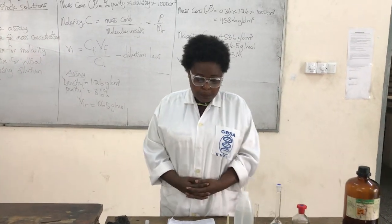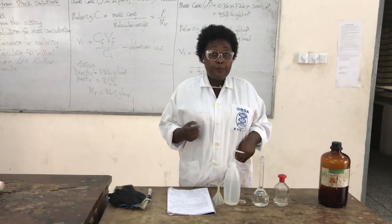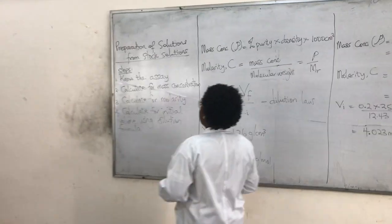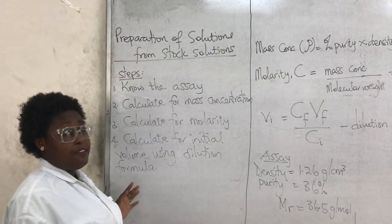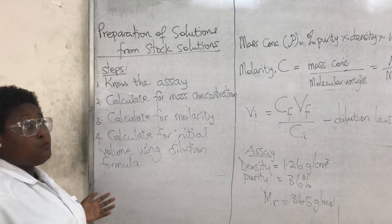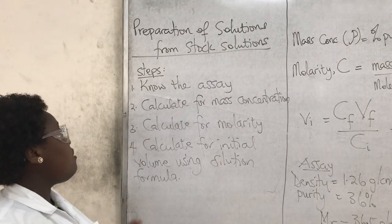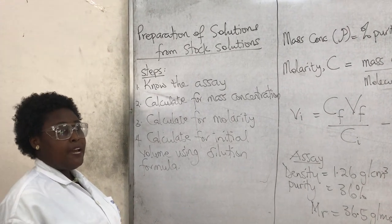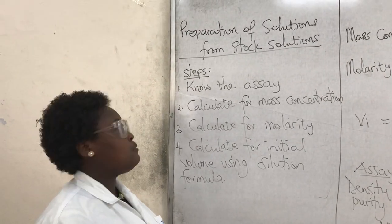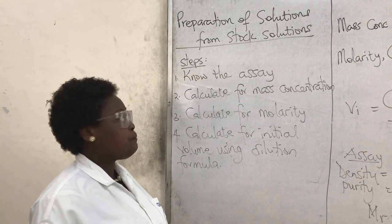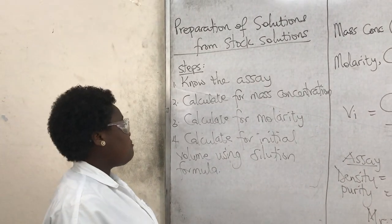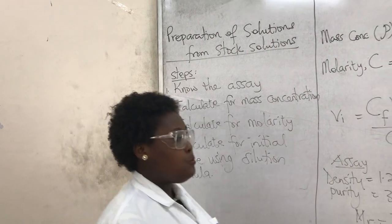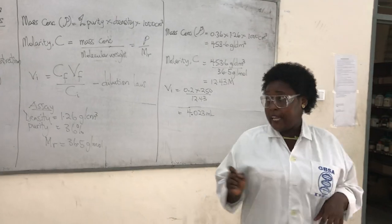Before you prepare the solution, there are some steps you need to follow. I've made them very simple — you won't find these steps written exactly this way in any textbook. It involves four steps: first, know the assay; second, calculate the mass concentration; third, calculate the molarity; fourth, calculate the initial volume using the dilution formula.